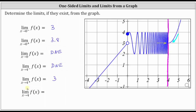For the final limit, we have the limit of f of x as x approaches four. For this limit to exist, we must be approaching the same function value from the left and right of four. The left limit does not exist and the right limit is positive three. Therefore, the limit of f of x as x approaches four does not exist.